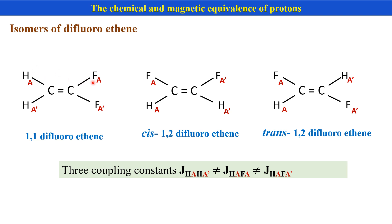Both are magnetic in nature and they are NMR active. But the coupling of HA with FA and the coupling of HA' with FA is not the same. Therefore, HA and HA' are chemically equivalent but magnetically non-equivalent.